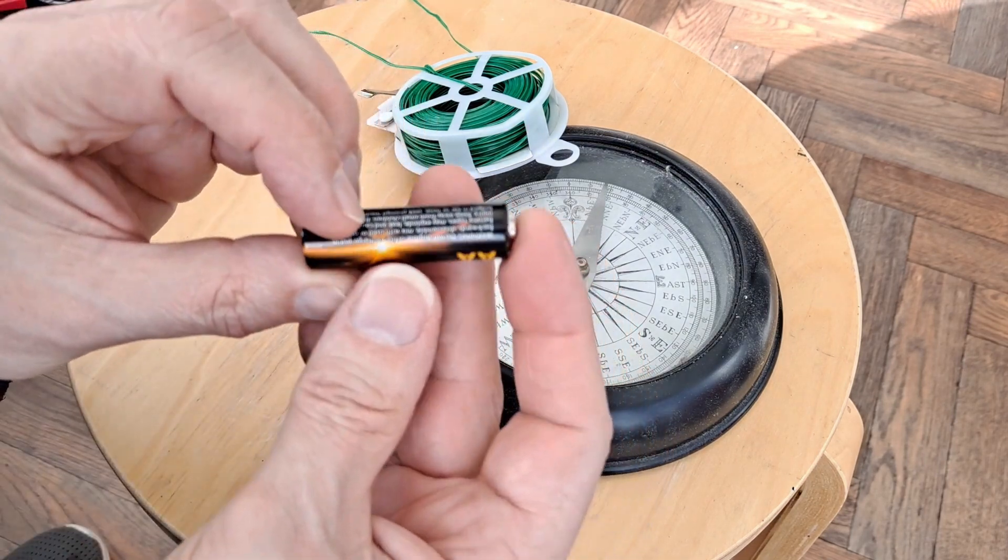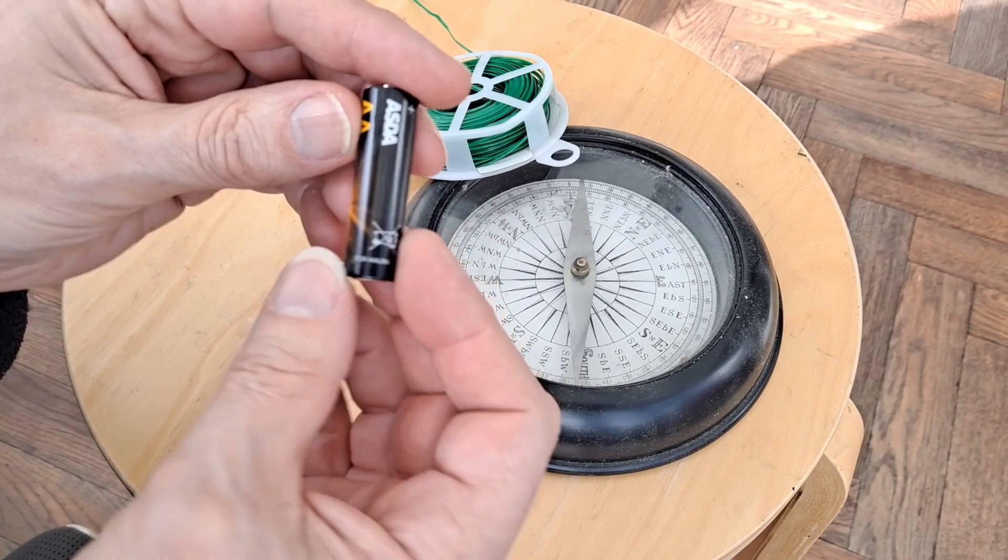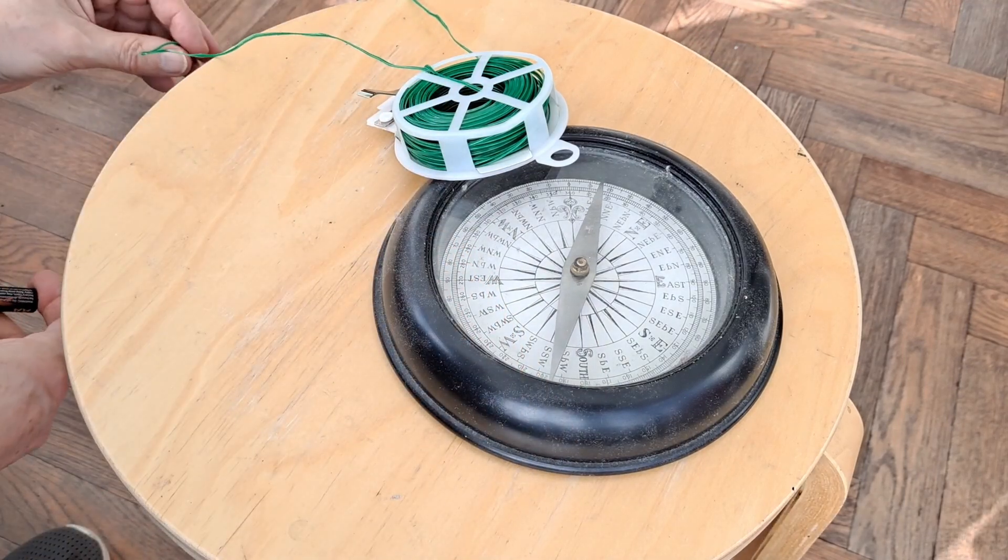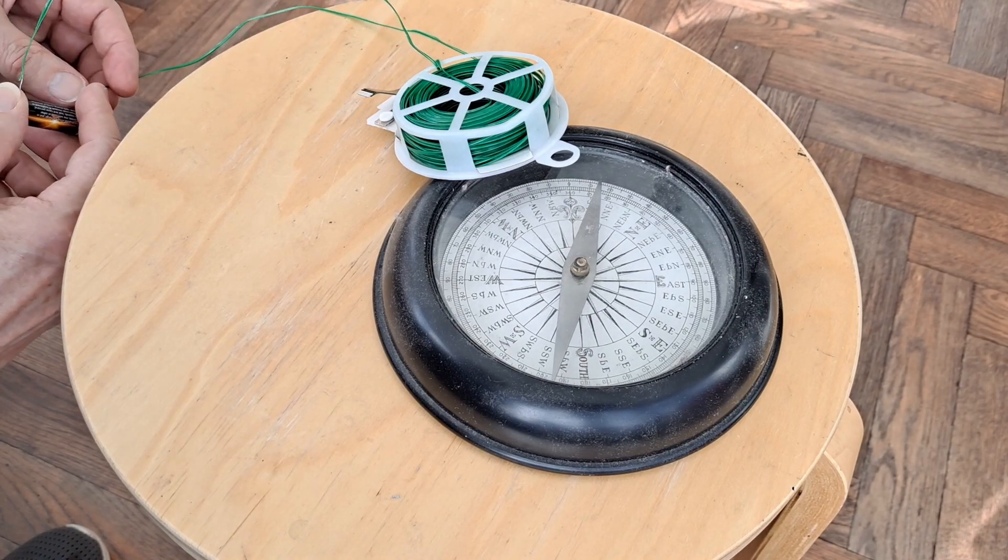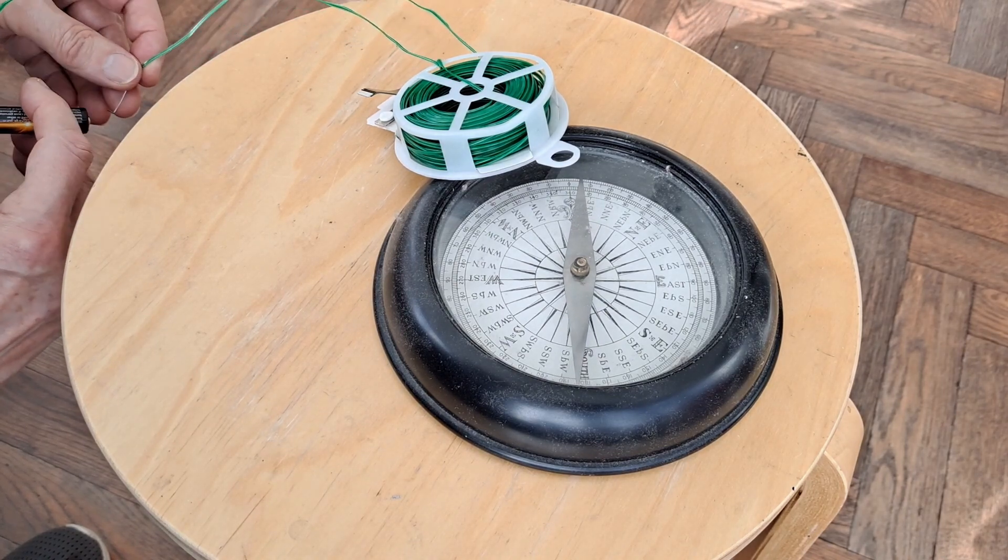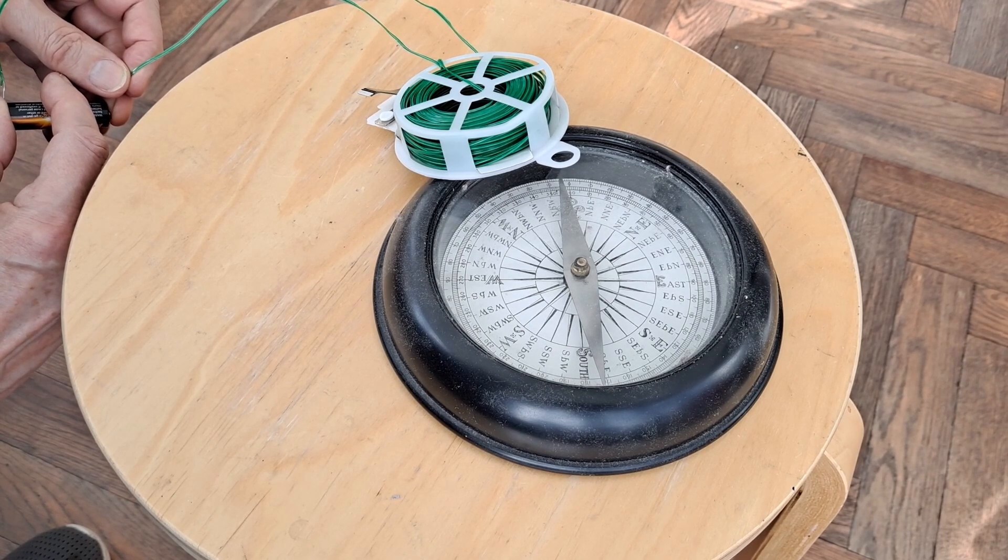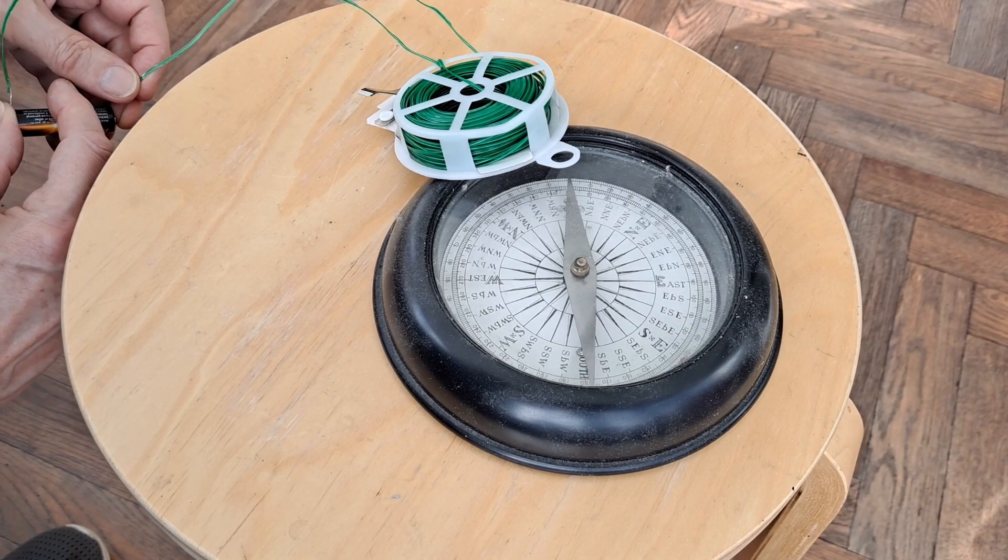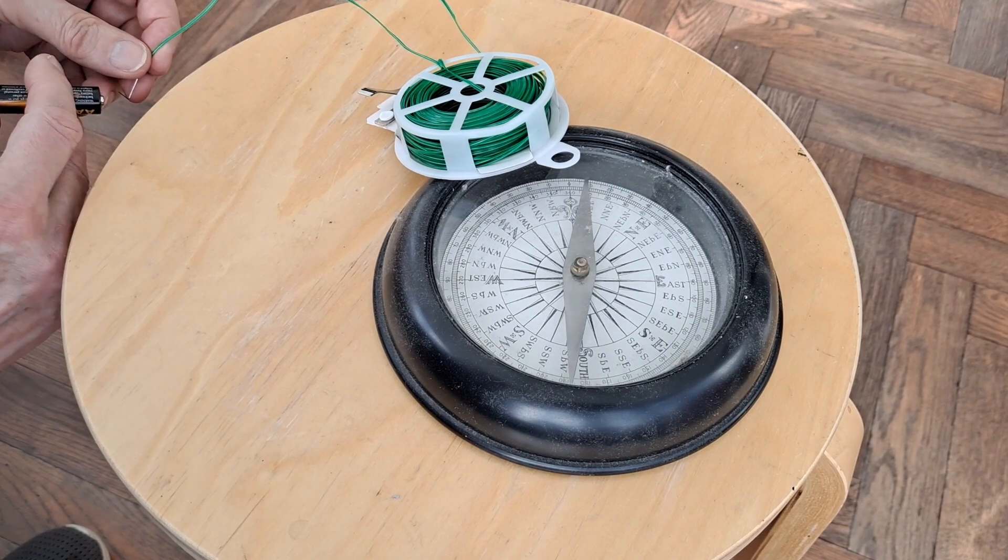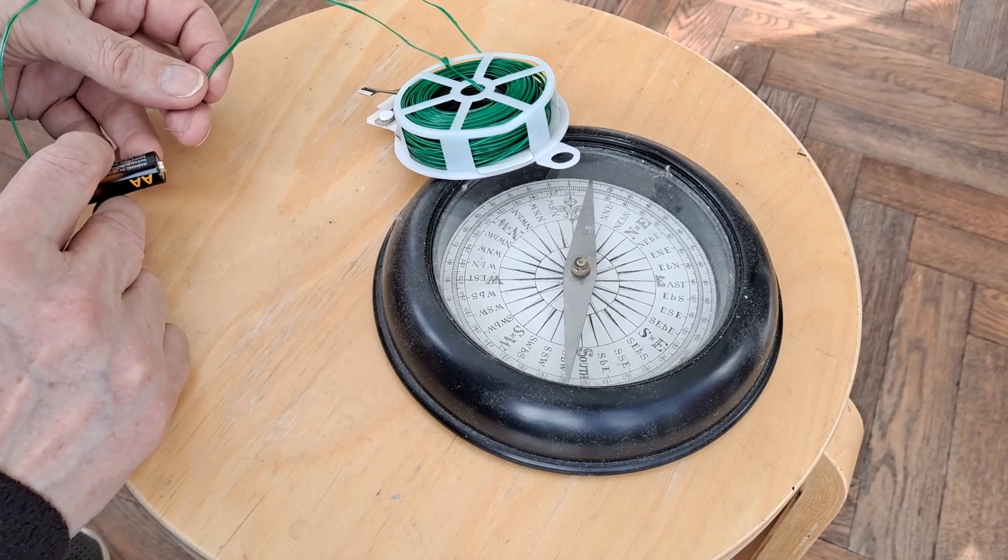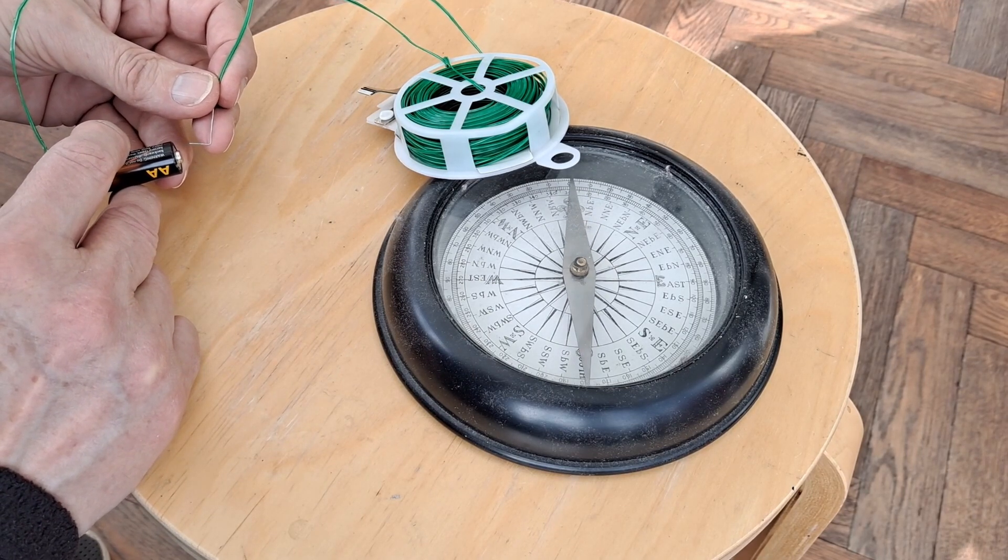I'll try an ordinary 1.5 volt battery first. If I go on the end of here, we're attracting it slightly, not much. I should have done that so you could see what I was doing. Let it settle down again.